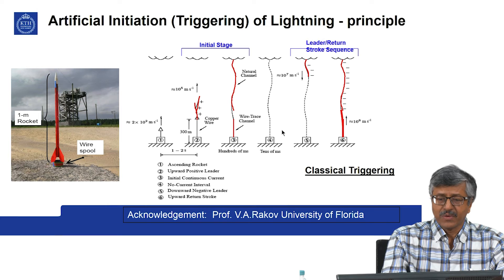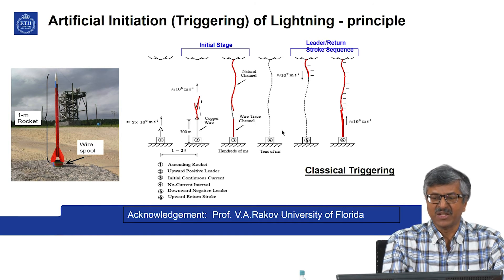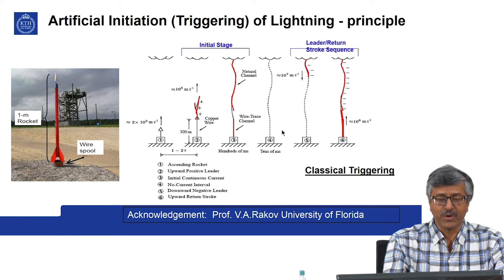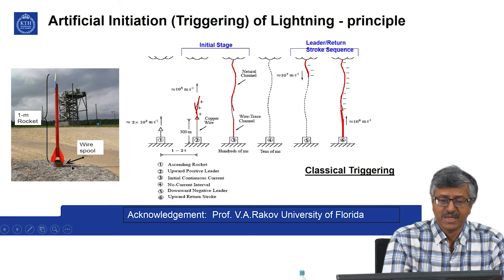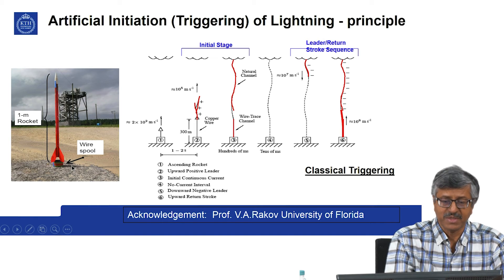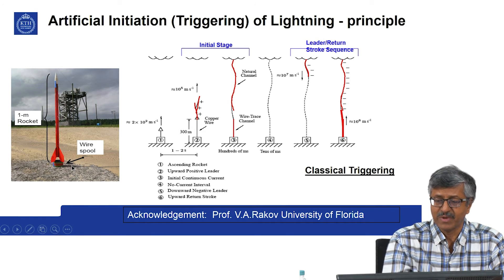A lot of studies on lightning are done by artificial initiation of lightning by shooting a small rocket upward, with the rocket carrying a wire spool at the end. This is taken from experiments at the University of Florida in Gainesville, USA, courtesy of Professor V. Rakov.